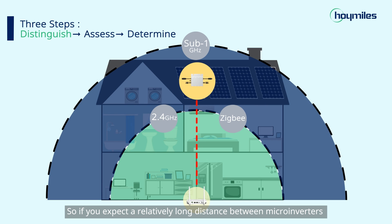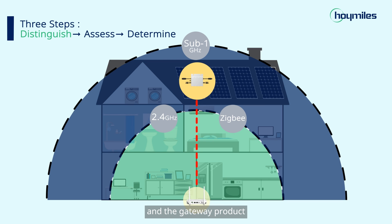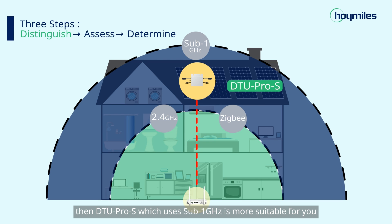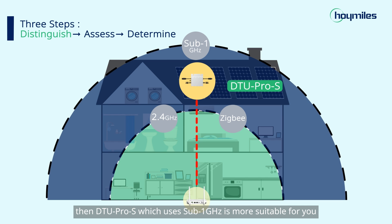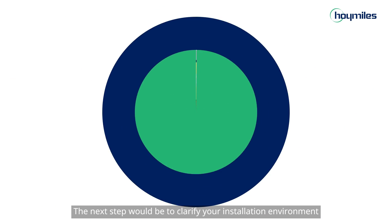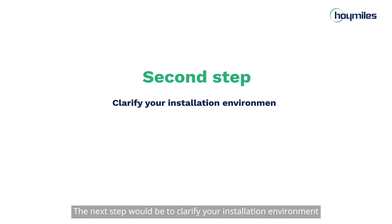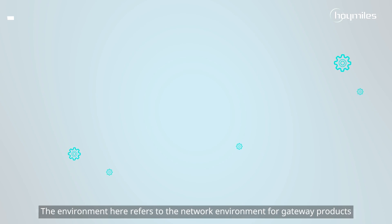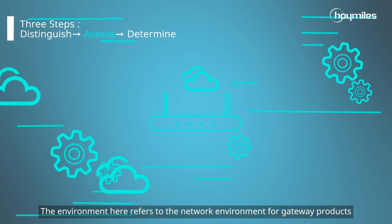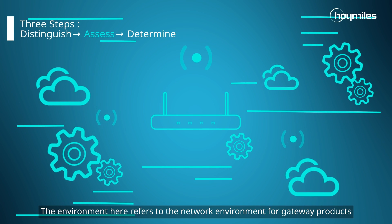So if you expect a relatively long distance between micro inverters and the gateway product, then DTU-Pro S, which uses Sub-1G, is more suitable for you. The next step would be to clarify your installation environment — specifically the network environment for gateway products.